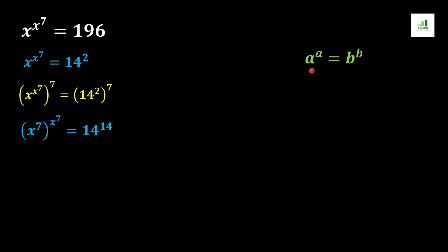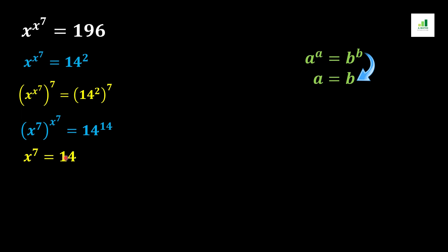From the basic rule of algebra, if a value and its power are the same on both sides of the equation — that is, if a to the power a equals b to the power b, meaning the value and power are the same on both sides — then we can take a equal to b. Applying the same rule here, we can see that x to the power 7 has a power of x to the power 7, and 14 has a power of 14. Both values have the same base and power, so we can write x to the power 7 equal to 14.